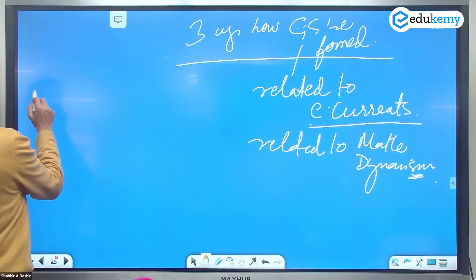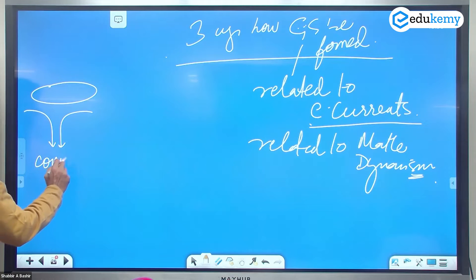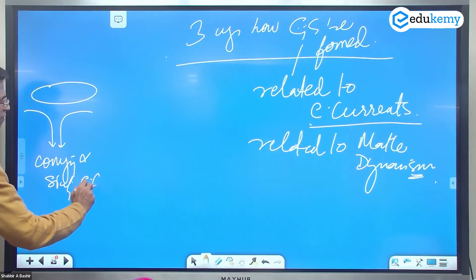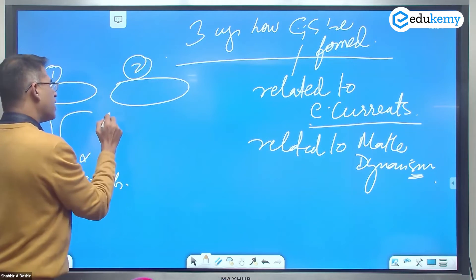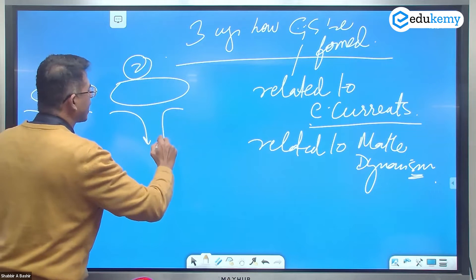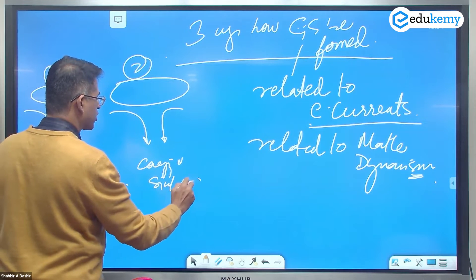So three possibilities. Maybe the crust convection currents are converging and sinking. Converging and sinking convection currents. Number two, again converging and sinking convection currents.